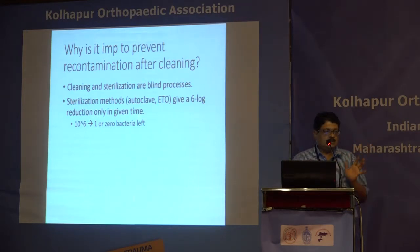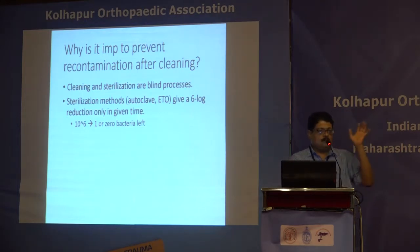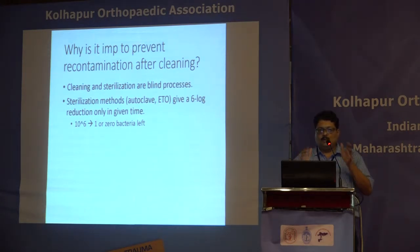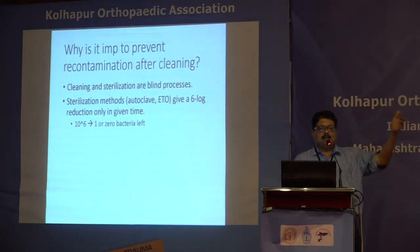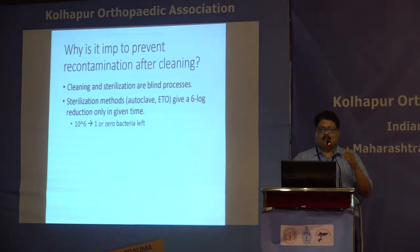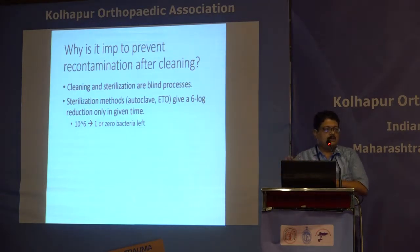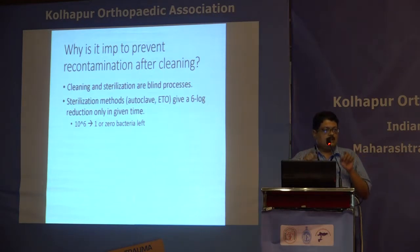For a method to be classified as a sterilization method it must satisfy two criteria: first, it should kill a large number of bacterial spores; second, it should give a 10-log reduction in the bacterial count. So if you start out with 10^6 bacteria on the instrument, at the end of the process there should be one or zero bacteria left — in other words, a one in a million chance that a single viable organism remains. If the process satisfies both criteria, it is called a sterilization method.